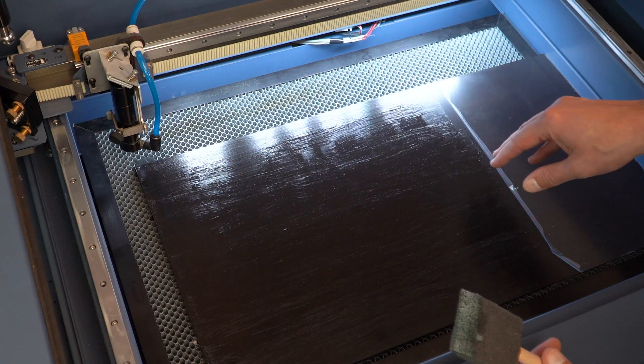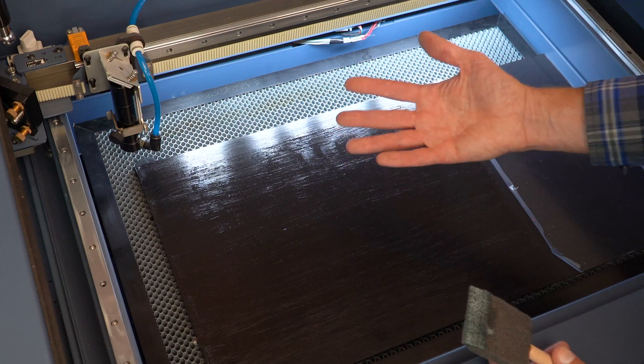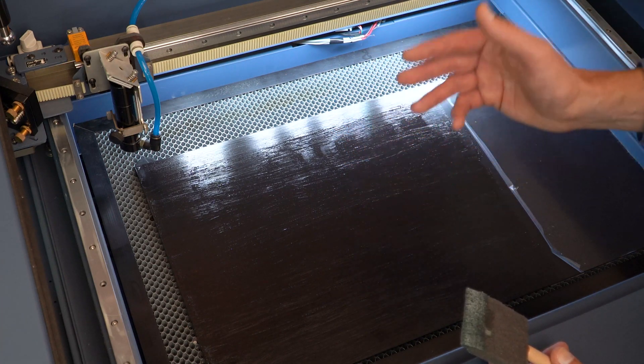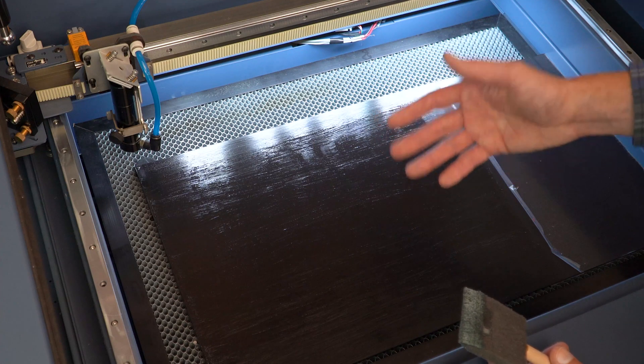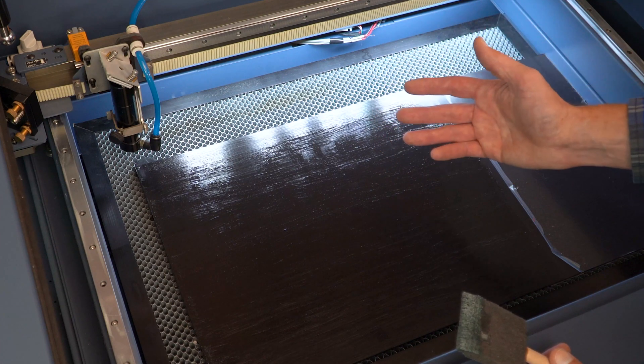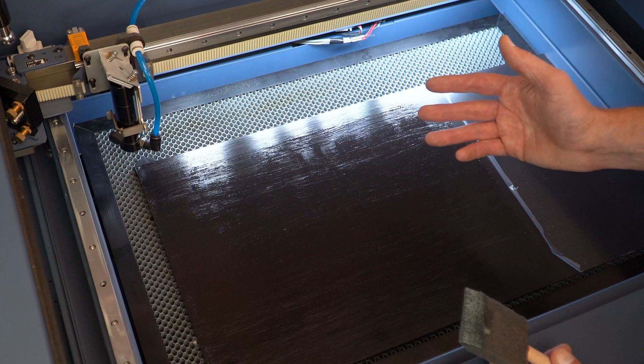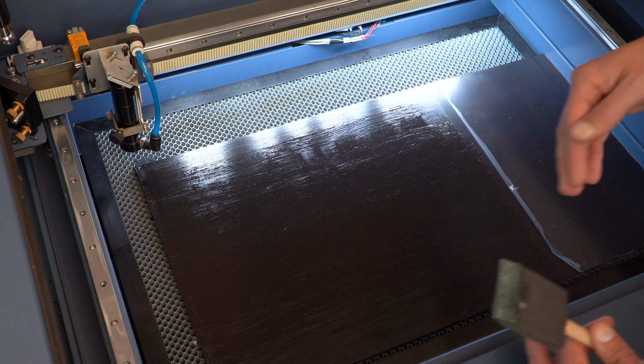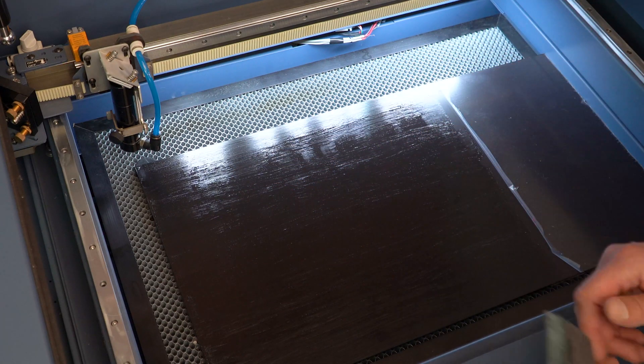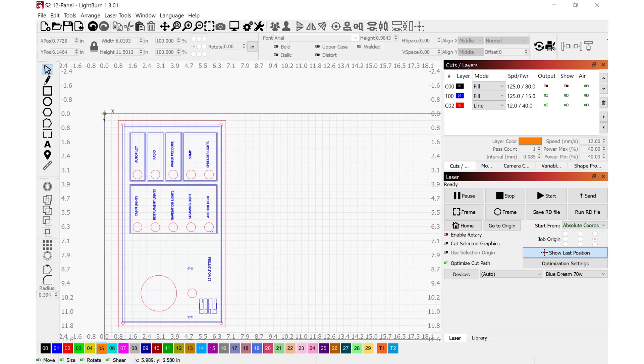And by the way, I do have the protective film that is on the acrylic—the top and the bottom—I do have that peeled back. I've experimented with it on, with it off. It all depends on the manufacturer. And because I use different manufacturers of acrylic, I just know that with the best consistency I just roll it back and I always know what to expect.